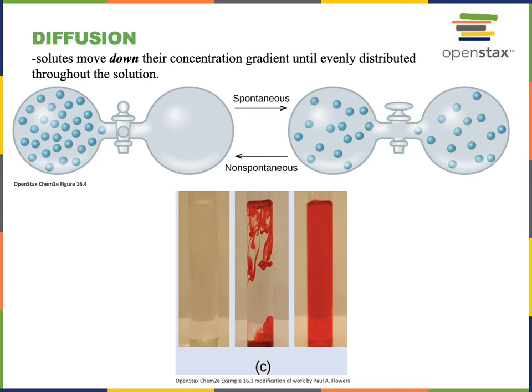Diffusion is the movement of solute down its concentration gradient. If we had a flask filled with a chemical on one side connected to an empty flask on the other side, as shown in the illustration here, and a barrier between the two flasks was opened to allow a channel to connect the two flasks, the chemical would spontaneously spread or diffuse from the area of high concentration to the other side where there was initially no chemical or a very low concentration of that chemical.